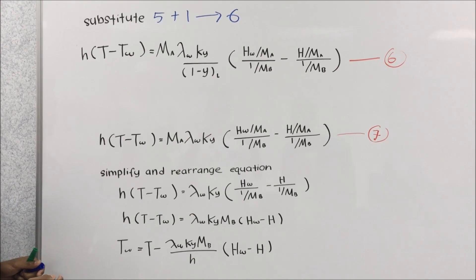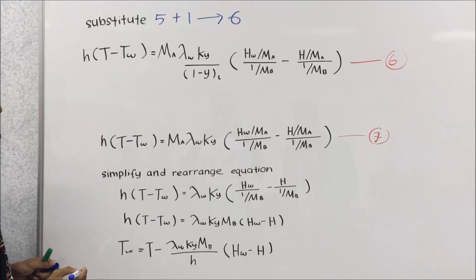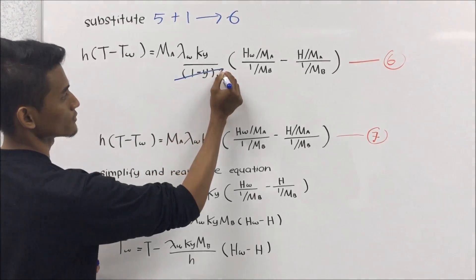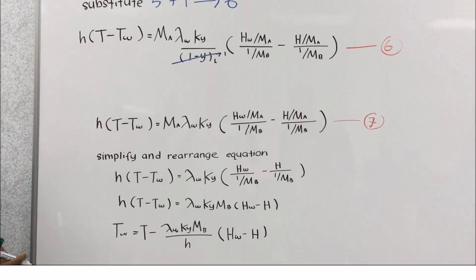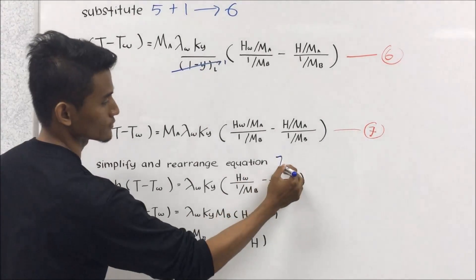Where 1 over 1 minus YL is nearly unity and can be omitted. Then we will get equation 7. After that, we simplify and rearrange equation 7. And we will get the final equation.